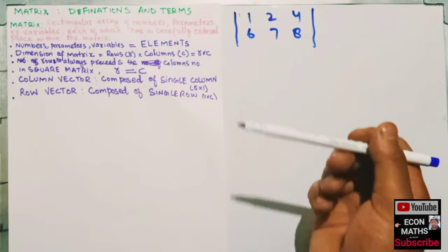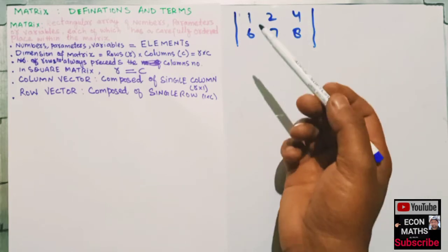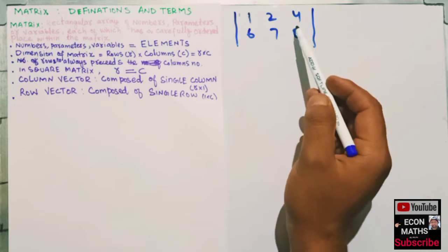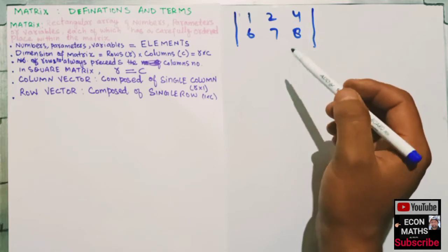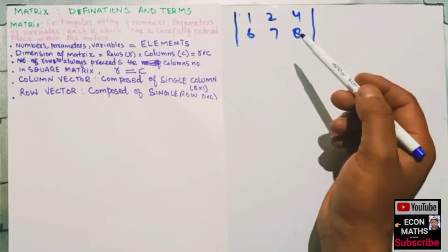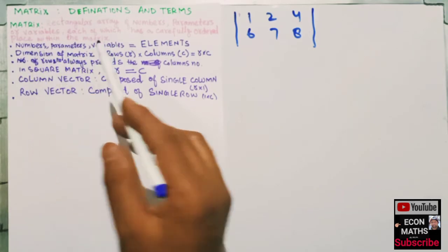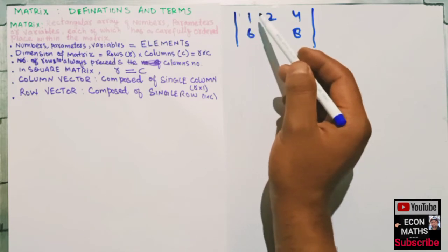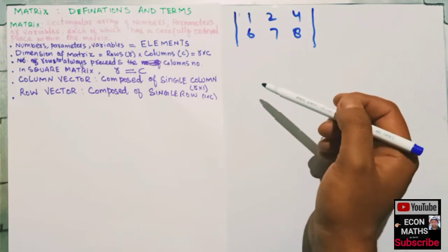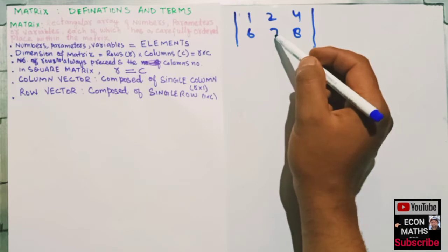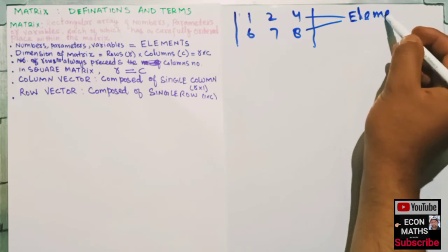For example, if I have this arrangement of numbers, every number has a carefully ordered place within the matrix — this is not a randomization. Numbers, parameters, or variables are all called the elements of the matrix. So these numbers — four, eight, seven, two, one, six — are the elements of the matrix.